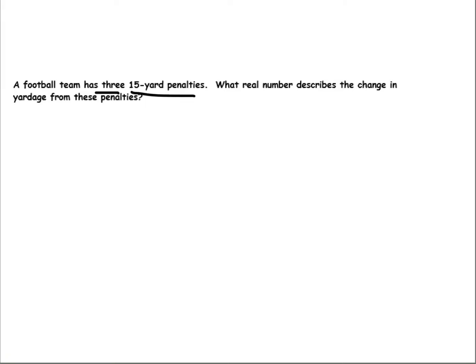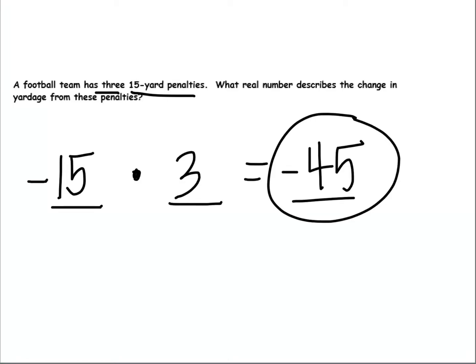A football team has 3 fifteen-yard penalties. What real number describes the change in yardage from these penalties? Well, I have 3 of these 15-yard penalties. If it's a penalty, that's a negative number. So, negative 15 times 3. I have different signs, so my answer is going to be negative. And 15 times 3 is 45.